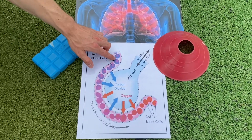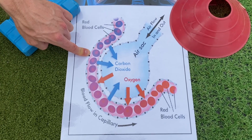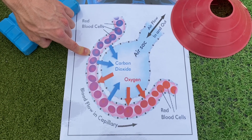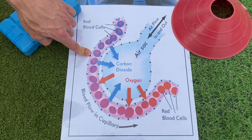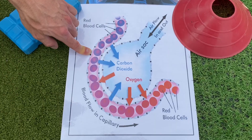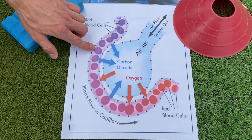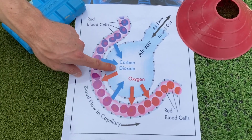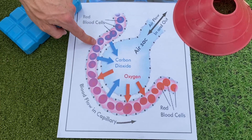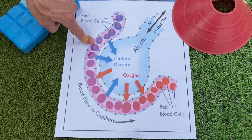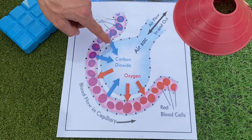As red blood cells come into the capillary you can see that they are blue in colour. They are not blue in real life, but we illustrate this in images to show that they are deoxygenated because they contain high levels of CO2. CO2, carbon dioxide, starts to diffuse from the capillary because there is a high concentration of carbon dioxide in this area, and as a result the CO2 moves from the capillary to the alveolus.